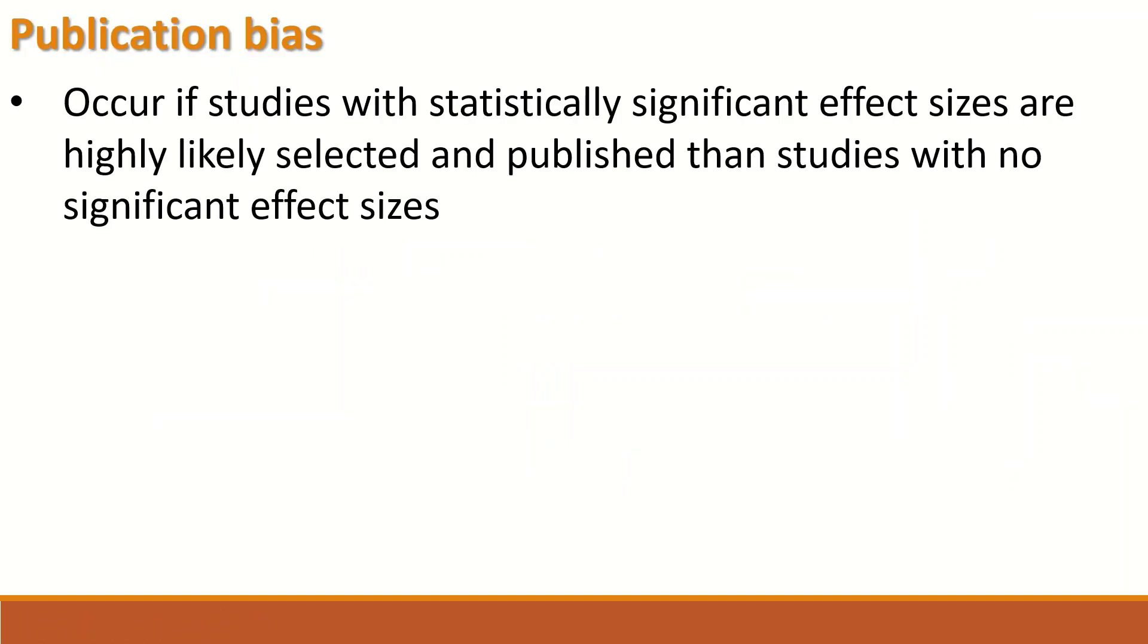So what is a publication bias? A publication bias occurs when studies with statistically significant effect sizes are highly likely picked, chosen, selected, and published than those studies with no significant effect size. So there is bias in selecting which data to include in the analysis based on the effect size.